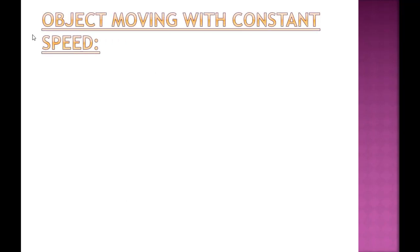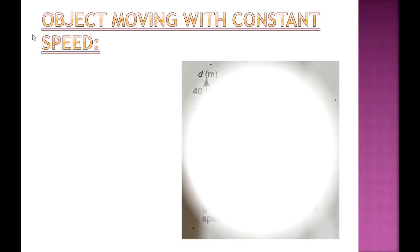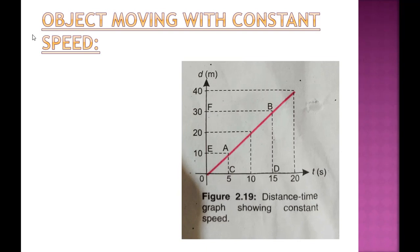When the object is moving with constant speed — constant means fixed speed — the graph is as shown in figure 2.19, the distance-time graph showing constant speed. On the x-axis, the time interval is from 0 to 5, 5 to 10, 10 to 15, and 15 to 20 seconds. On the y-axis, distance is from 0 to 10, 10 to 20, 20 to 30, and 30 to 40 meters. With constant speed, the object covers equal distance in equal intervals of time.